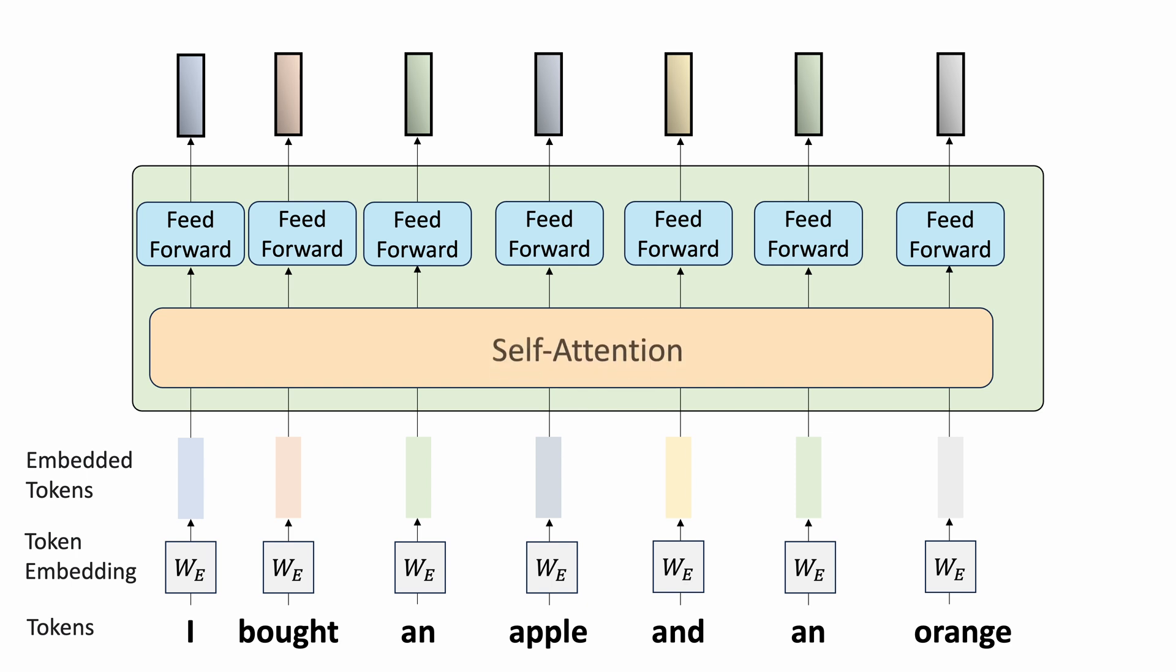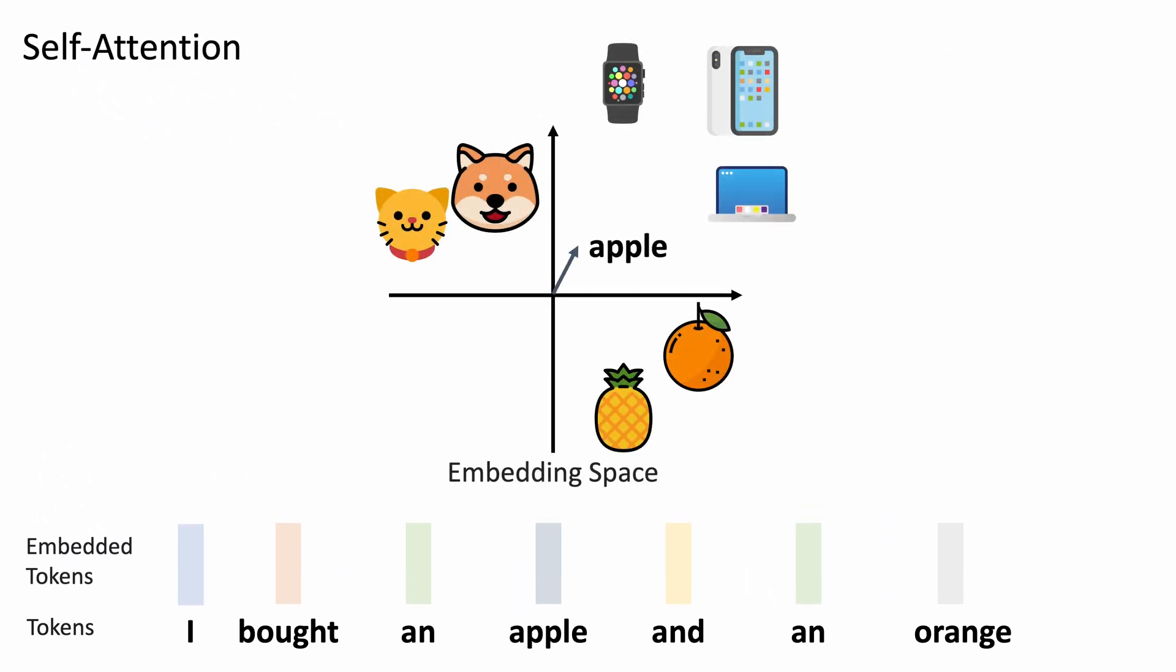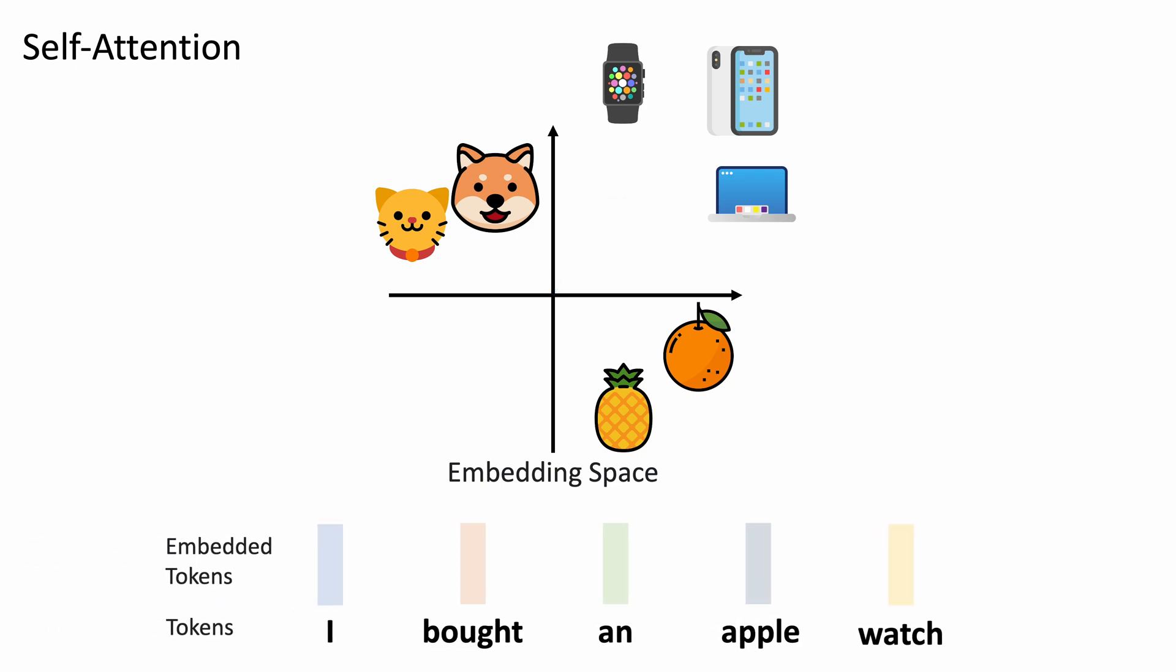This is where the attention mechanism comes in. Let's use a toy example to get some intuition. If we see orange as a relevant token in the sentence, we can update the feature vector for token apple so that it is semantically closer to fruit. If we see watch instead, we update the feature vector so that it is more associated with tech products like phones and laptops. Let's first use token similarity to determine the relevance. We can measure the similarity between tokens using vector dot products.